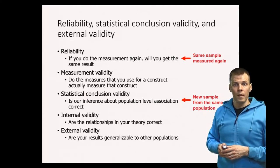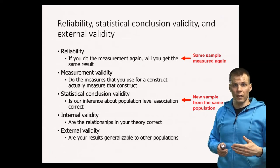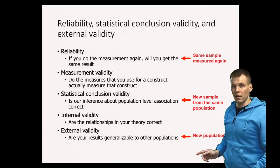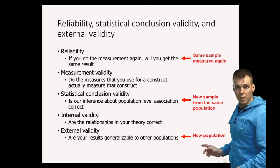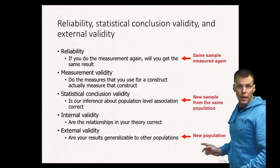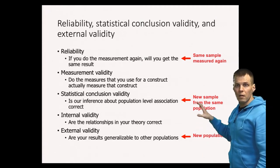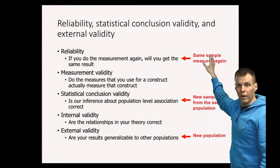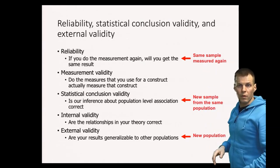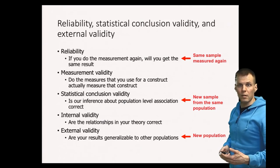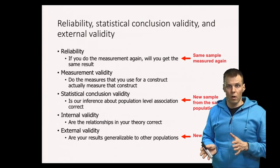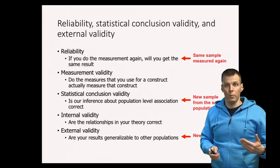Finally, there is external validity, which is about a new population. If our results don't generalize — if we repeat the study with a new population and don't get the same result — and we have already ruled out sampling error and unreliability, then it is an issue of external validity or generalizability. These are different sources of random error explaining why your results could differ from one study to another, and it's important to understand these differences because they are sometimes confused.